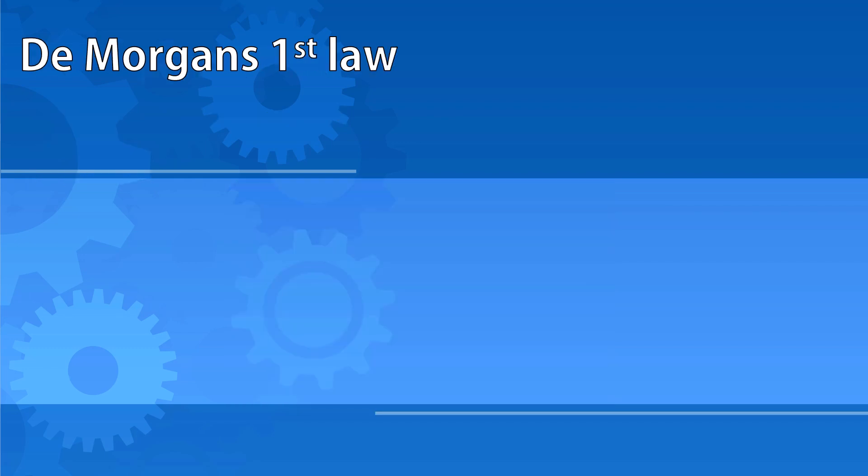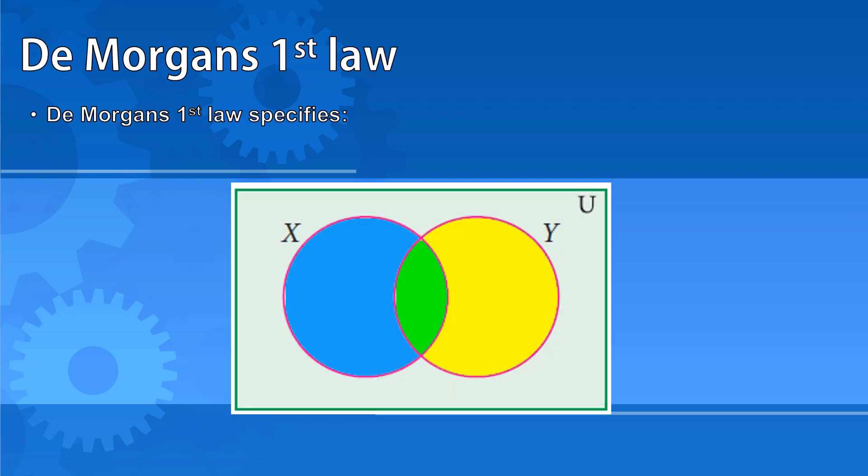De Morgan's first law specifies that NOT (a OR b) is the same as saying NOT a AND NOT b. If you look at this Venn diagram, we can see that both of these represent the grey area outside of the two circles.